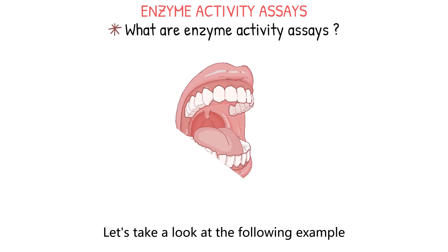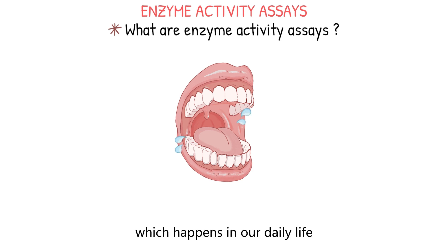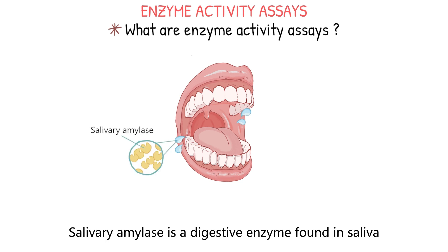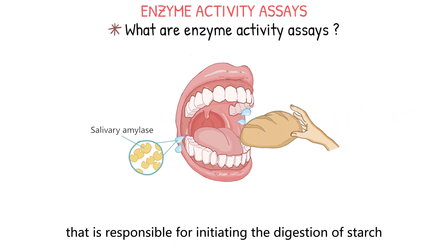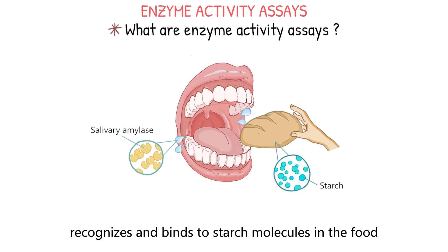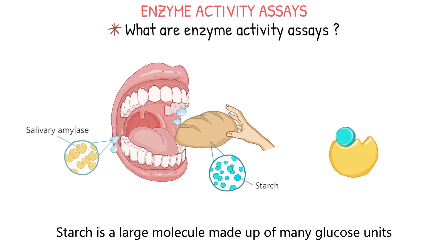Let's take a look at the following example, which happens in our daily life, to illustrate the working principle of enzyme activity assays. Salivary amylase is a digestive enzyme found in saliva that is responsible for initiating the digestion of starch in the mouth. Salivary amylase, as an enzyme, recognizes and binds to starch molecules in the food. Starch is a large molecule made up of many glucose units.